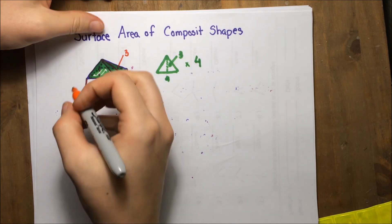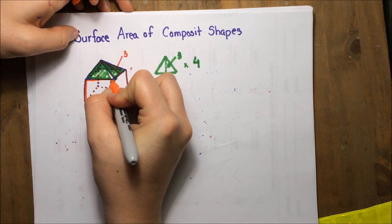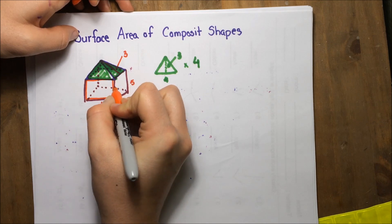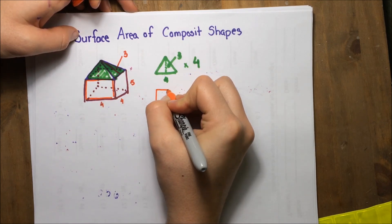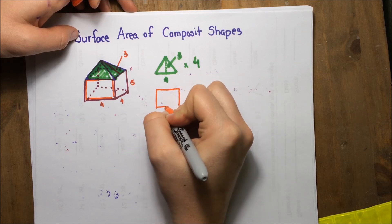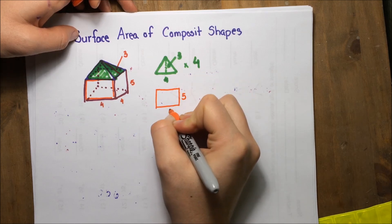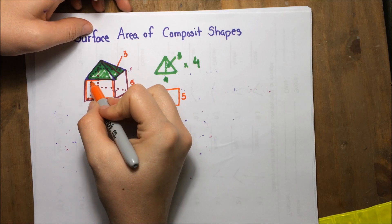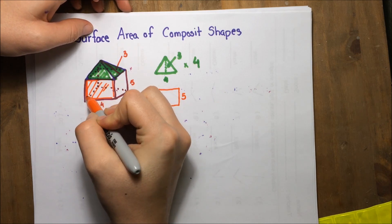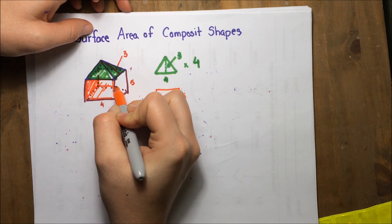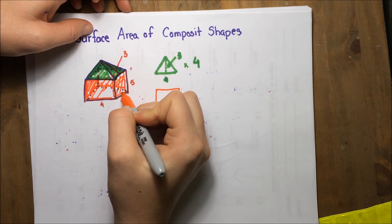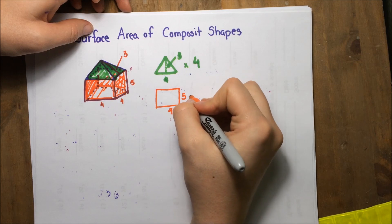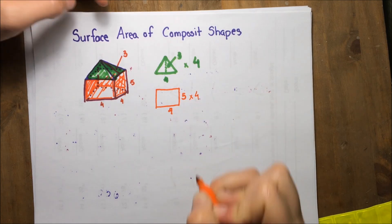Next, I'm going to look at this rectangle that I have right here. That one is five, the height, by four. If I count, there's one there, two to the side, three in the back, and four up front. So there's four total of that shape.